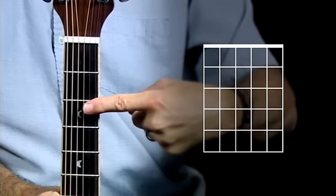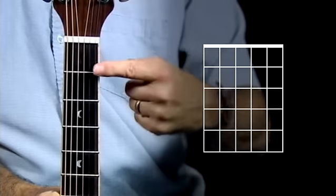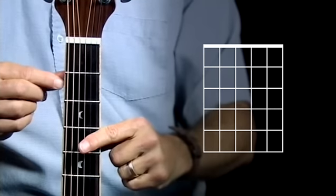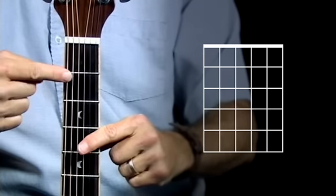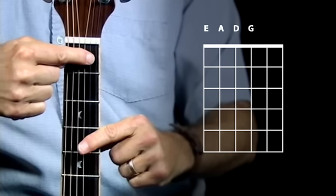Those are your fret markers. So this space in here would be the first fret, and then these are your strings going vertically, and from the heavy string, the bass string, all the way through one, is labeled E, A, D, G, B, and E.